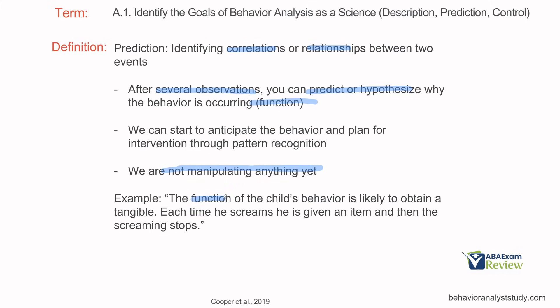Even though we're making hypotheses and looking for correlations, we're not manipulating anything yet. For example, the function of the child's behavior is likely to obtain a tangible. Not only is the child screaming, but we're saying likely because he wants a tangible. Each time he screams, he is given an item, and then the screaming stops. So our hypothesis is the child is screaming to get that tangible. This is our prediction.